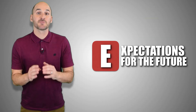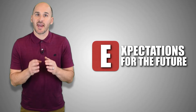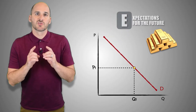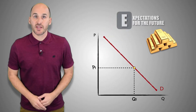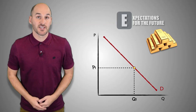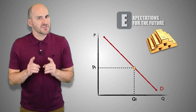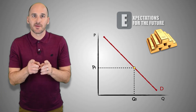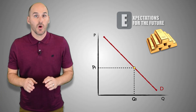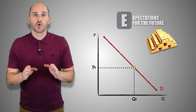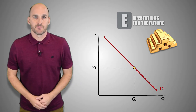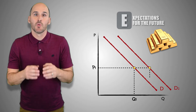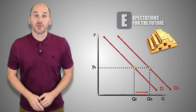A change in expectations for the future can fundamentally change the demand for a good or service. Suppose consumers in the gold market expect the price of gold to rise next year. If consumers anticipate that gold will be more expensive in the near future, they'll decide to buy gold now while it's cheaper — consumers will buy greater quantities of gold at every price level. The expectation of a price increase will cause an increase in demand.